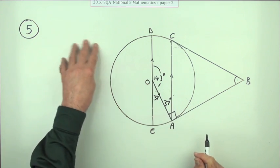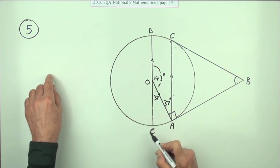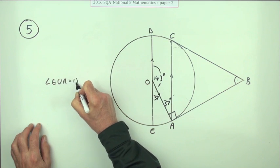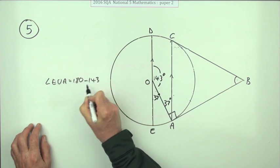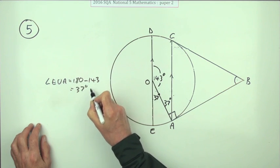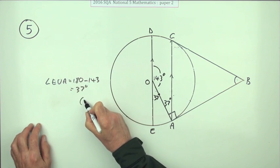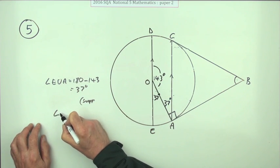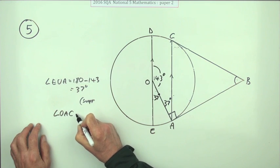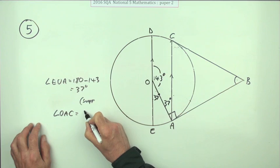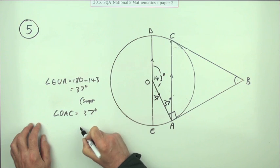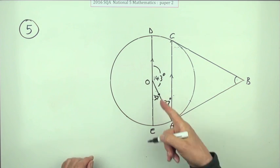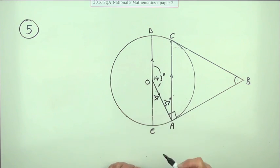That's an awful lot of statements to write down. You'd have to say angle EOA equals 180 minus 143, which equals 37, giving the reason: supplementary. Then angle OAC equals 37, reason: alternate. I think you're just allowed to write it in on the diagram, hopefully.